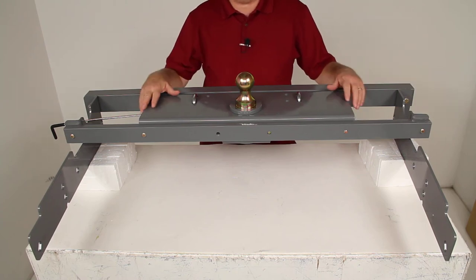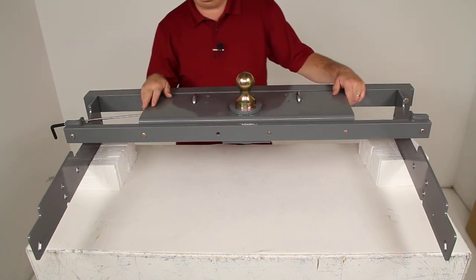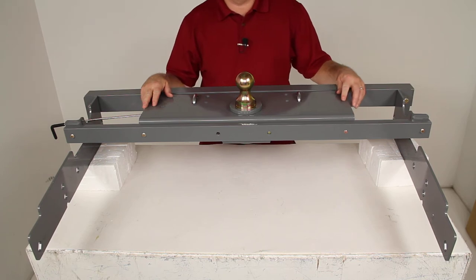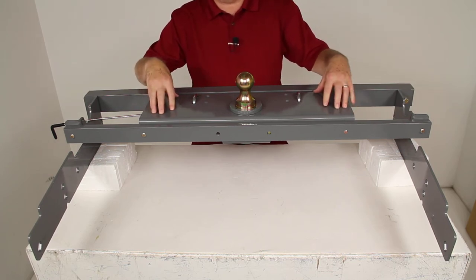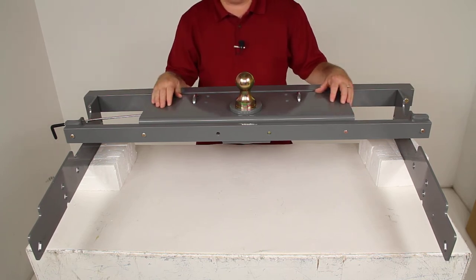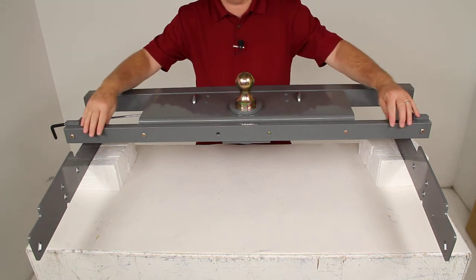Today we're going to review part number BWGNRK1050. This is the B&W turnover ball underbed gooseneck trailer hitch with the custom installation kit.